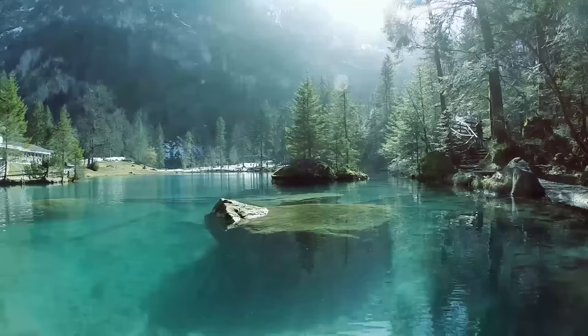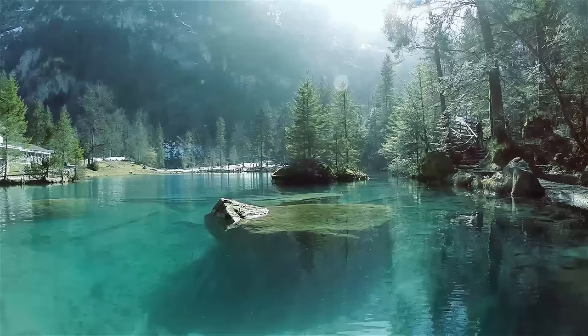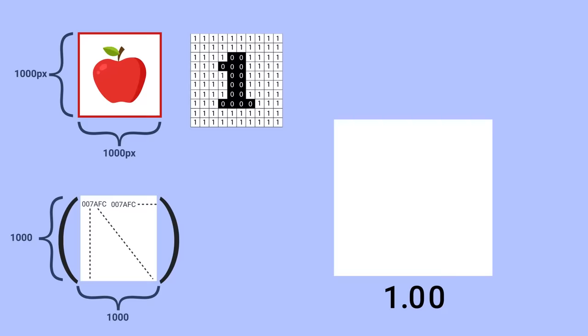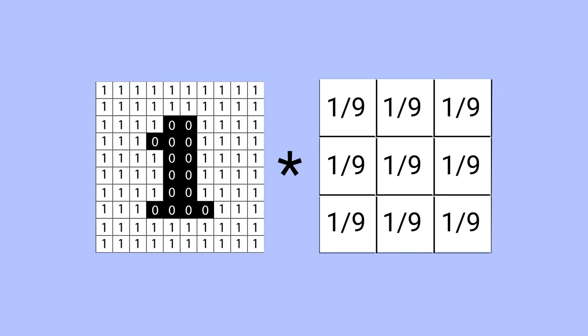So when it comes to image processing and manipulation whether it be blurring an image detecting edges sharpening an image and so on it all comes down to manipulating the pixels in a very specific way. To see an example let's mathematically blur this image of the number one.